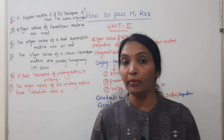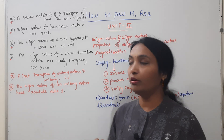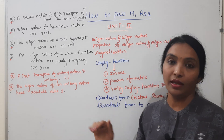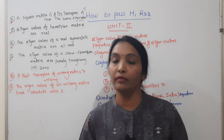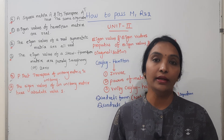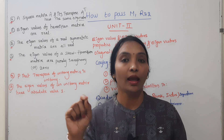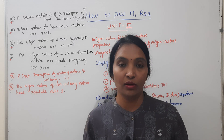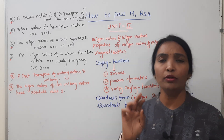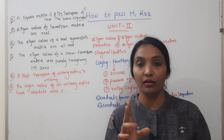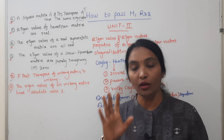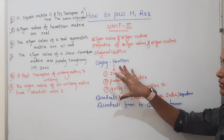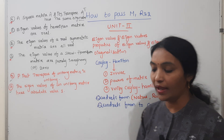Here we are going to talk about one more question. First of all, Hermitian and unitary — define the eigenvalues and define the eigenvectors. This is the Cayley-Hamilton Theorem. What is the statement of Cayley-Hamilton? There is no proof in your syllabus. We are going to talk about two other questions and that pattern.